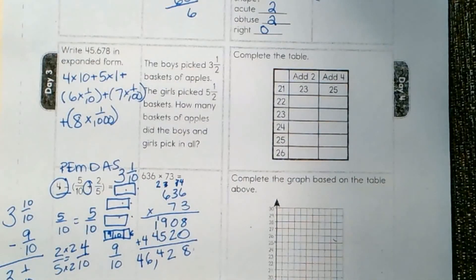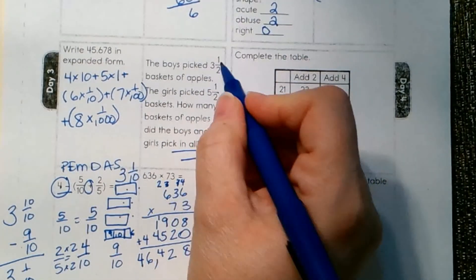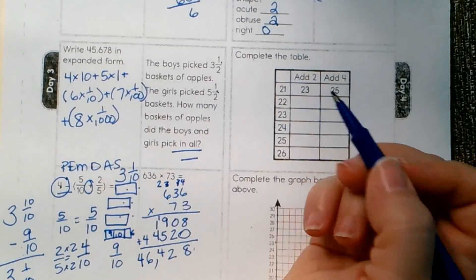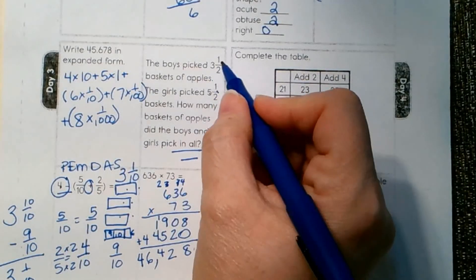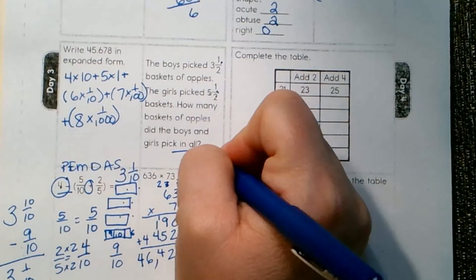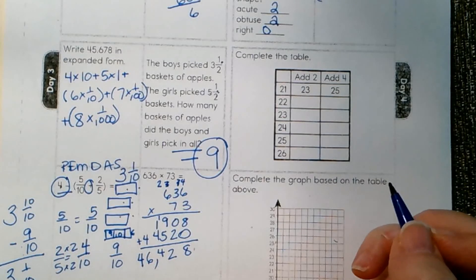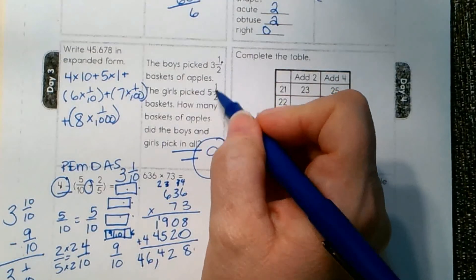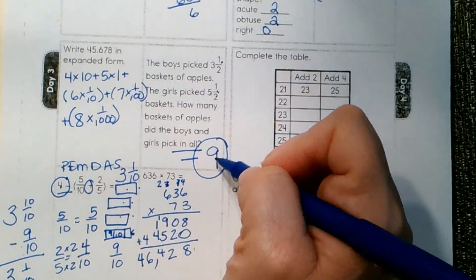The boys picked 3 and a half baskets of apples. The girls picked 5 and a half baskets. How many baskets of apples did they pick in all? Well, 2 halves make a whole. 5 plus 3, 8, plus the whole is 9. We picked 9 baskets of apples. 2 halves make a whole. 5, 6, 7, 8, plus the whole is 9.